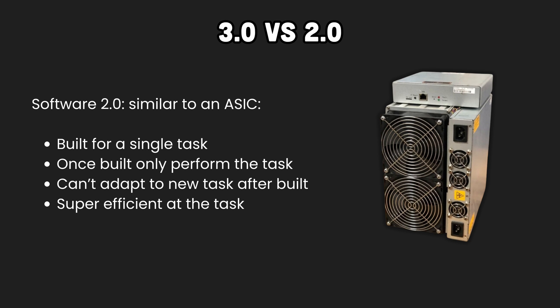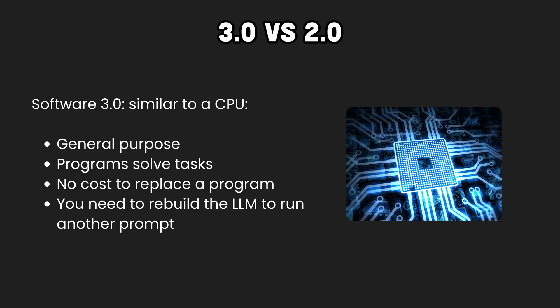To fully grasp the difference between 2.0 and 3.0, consider this analogy: Software 2.0 can be compared to ASICs — application-specific integrated circuits. For instance, there are ASICs to mine Bitcoin, and even though a general-purpose CPU can do it, the ASIC will be faster and more energy efficient. Software 3.0 is more like a modern CPU — general-purpose and programmable without needing to be recreated for each task. You don't have to rebuild the CPU to build another program; only the programs, your prompts, change.